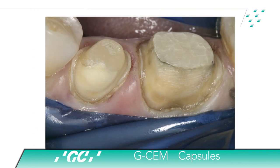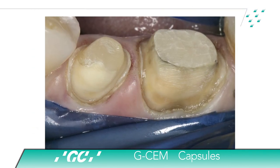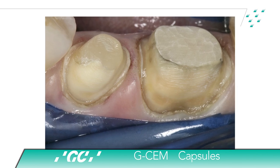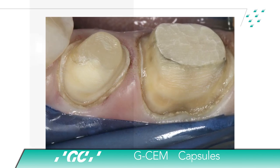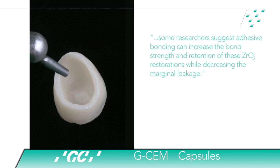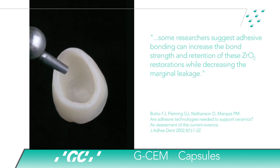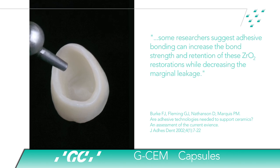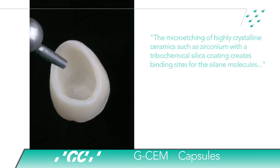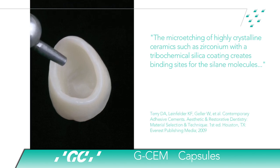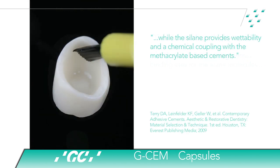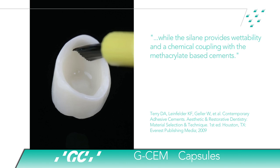A mixture of pumice and water is used with a rubber cup at conventional speed to clean the surface of the preparation. Adhesive cementation with surface treatment of ceramic material can improve the durability and reliability of the bond for high-strength, non-silica-based ceramic restorations. Micro-etching of the internal surface of the high-strength ceramic crown increases surface area for bonding, and silane application over the etched surface increases bond strength to the self-etched resin cement.